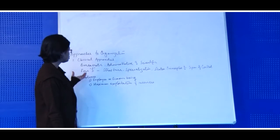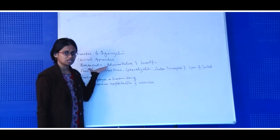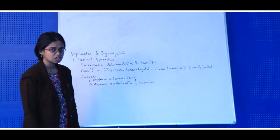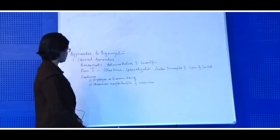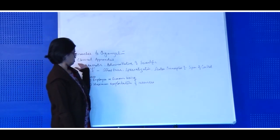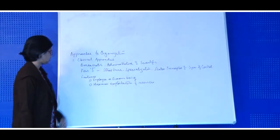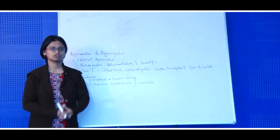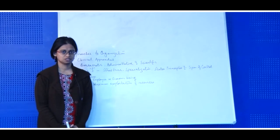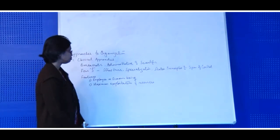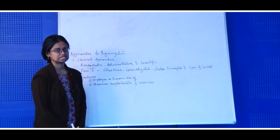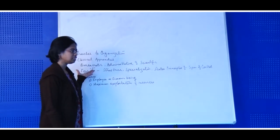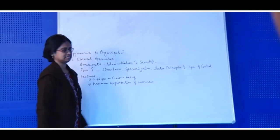Among the classical approaches, most of the time it emphasizes the bureaucratic understanding or the administrative understanding of the organizational structure. Classical approaches emphasize bureaucratic understanding, then administrative understanding, and then scientific understanding of the study of organization.